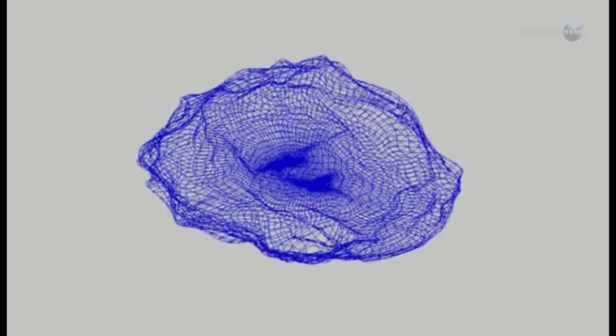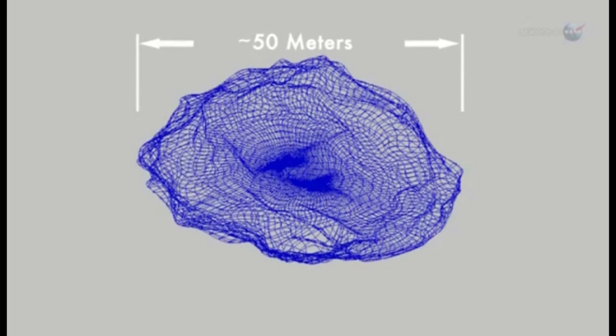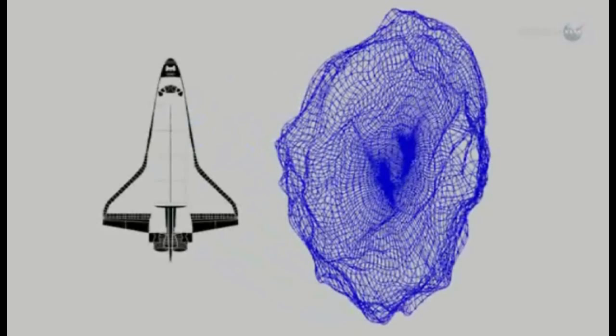2012 DA14 is a fairly typical near-Earth asteroid. It measures some 50 meters wide, neither very large nor very small, and is probably made of stone as opposed to ice or metal.